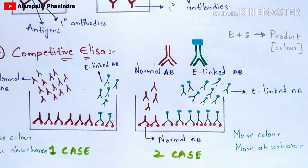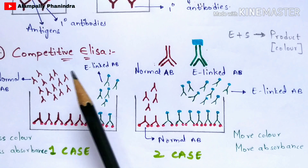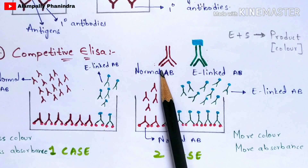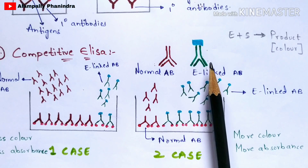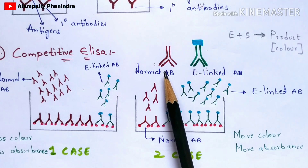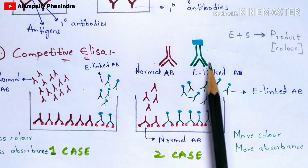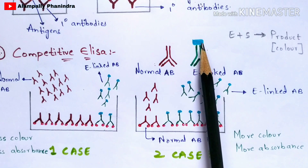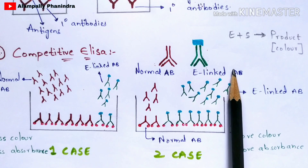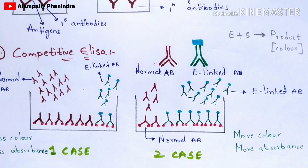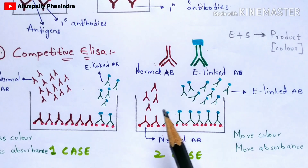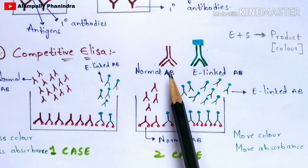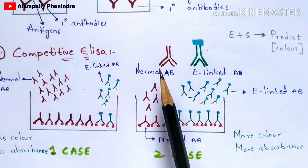The third type is competitive ELISA. Here, two types of antibodies are used: a normal antibody and an enzyme-linked antibody. The enzyme-linked antibody has an enzyme linked at the FC end. It is called competitive ELISA because there is a competition between the normal antibody and the enzyme-linked antibody — specifically, which one binds to more antigens.